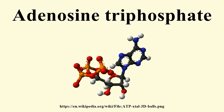ATP was discovered in 1929 by Carl Lohmann and independently by Cyrus Fiske and Yelop Subbarow of Harvard Medical School, but its correct structure was not determined until some years later. It was proposed to be the intermediary molecule between energy-yielding and energy-requiring reactions in cells by Fritz Albert Lippmann in 1941.